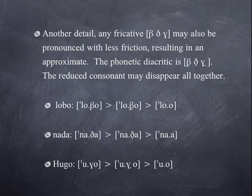This difference of going from the stop to the fricative depends on the speaker and sometimes it has disappeared altogether. So you could say lobo, but you could even say it softer, lobo. The word nada, for example - you can say nada, nada, nada, it just goes away. And the name Hugo: Hugo, Hugo, Hugo. Yeah, this kind of disappears altogether.